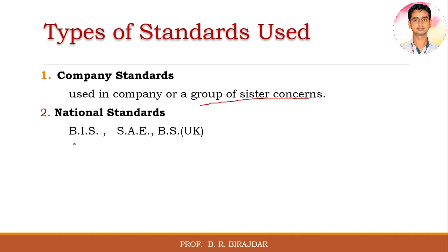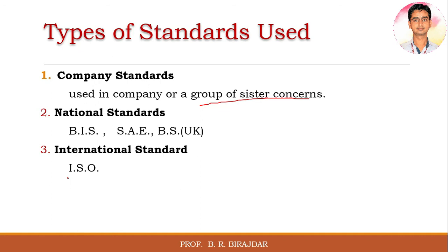The national standard is related to a particular country and varies country to country. The third type is the international standard — ISO, which stands for International Organization for Standardization. ISO is used worldwide and makes it very easy to communicate country to country and to manufacture components following a common set of standard rules. These are the different types of standards being used today.